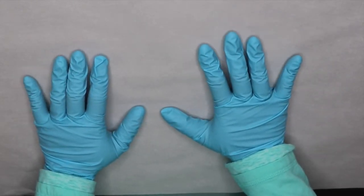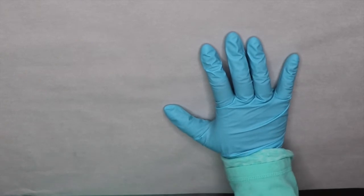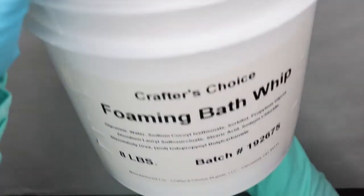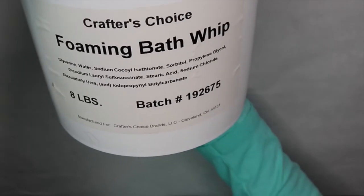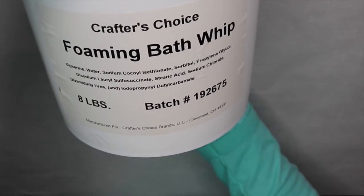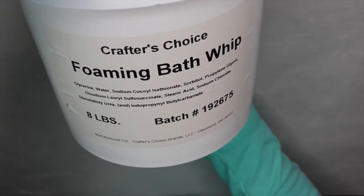To make our foaming sugar scrub we're going to be using Crafters Choice foaming bath whip. This will be our base for the sugar scrub.